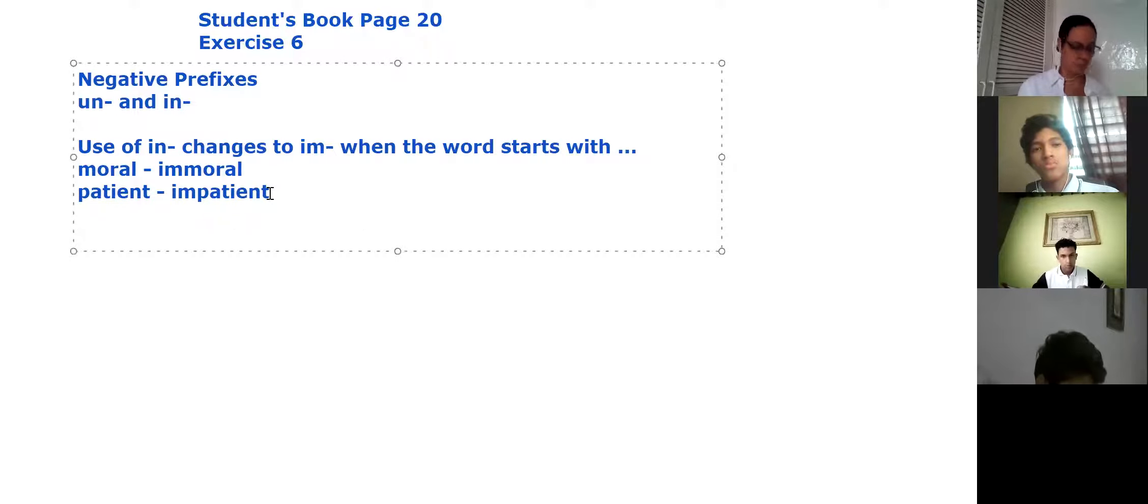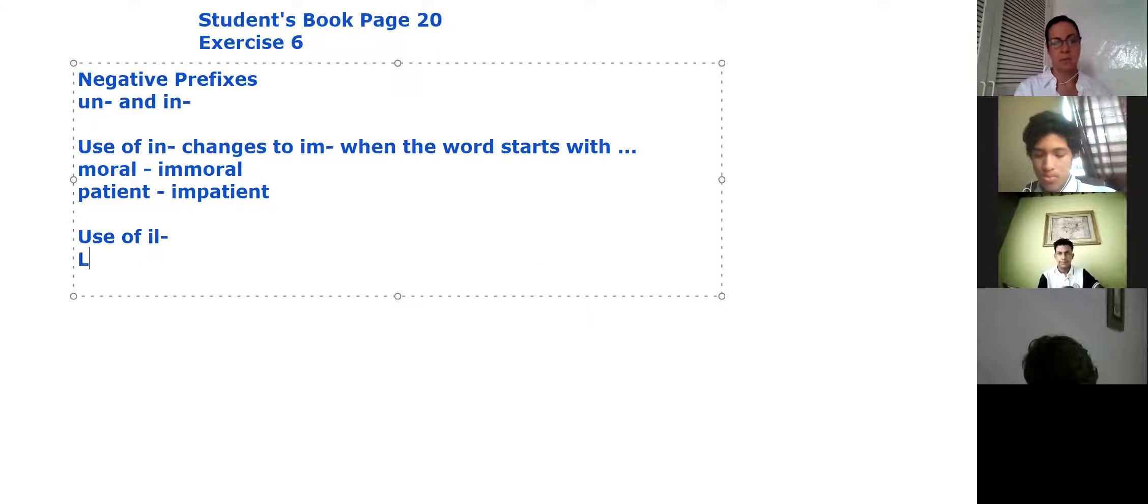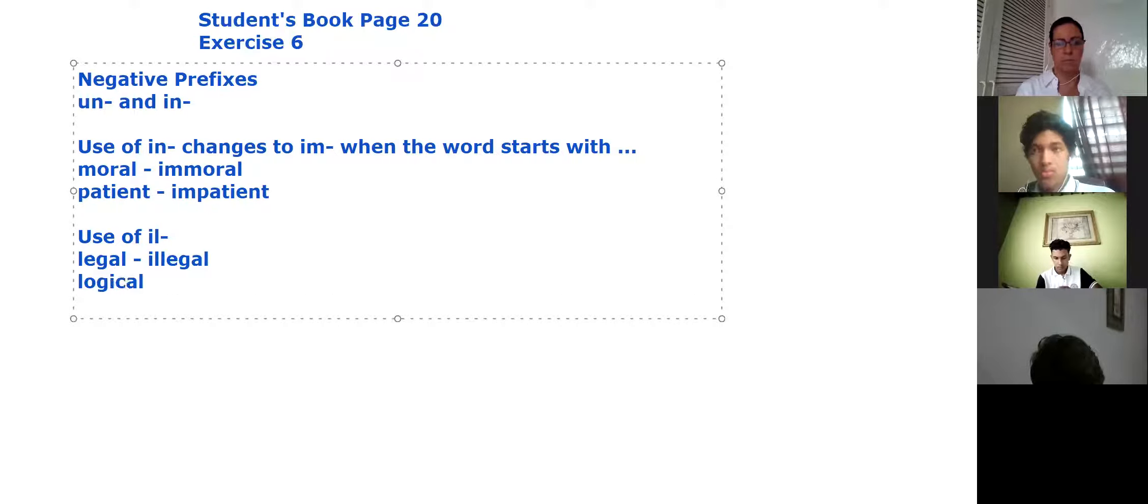When the word starts with L, we use the prefix I-L for words that begin with L. Like in illegal, legal changes to illegal. Logical becomes illogical.